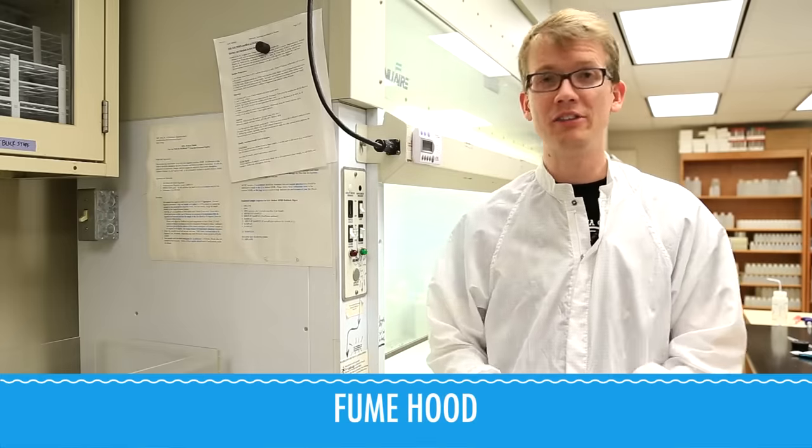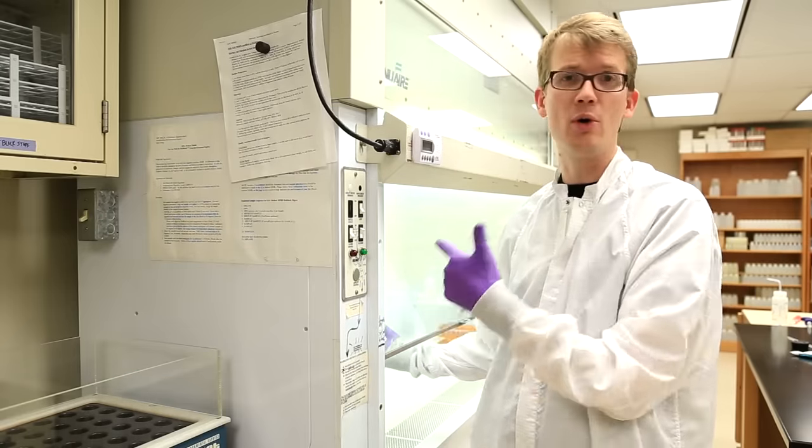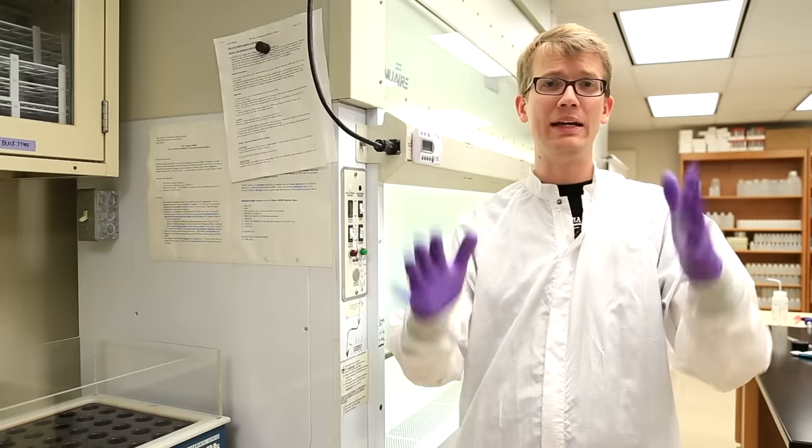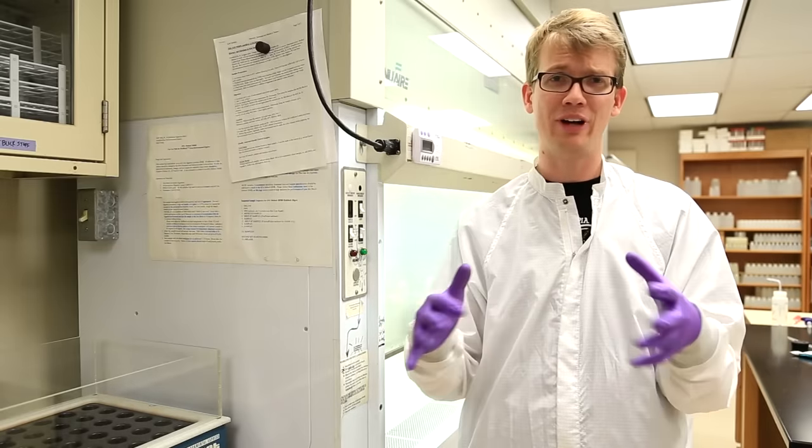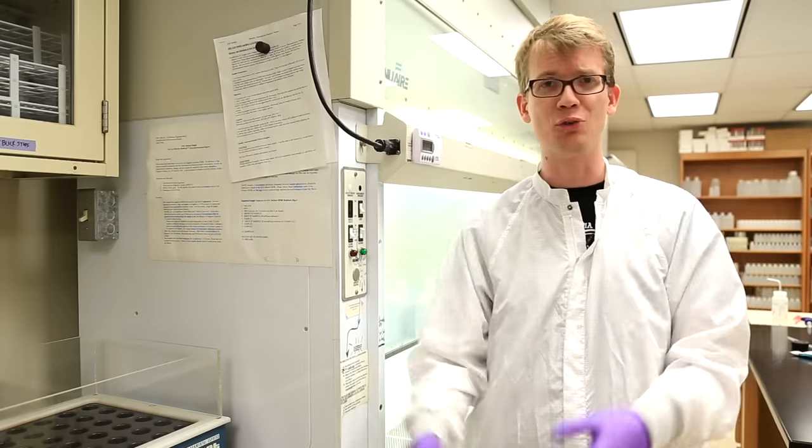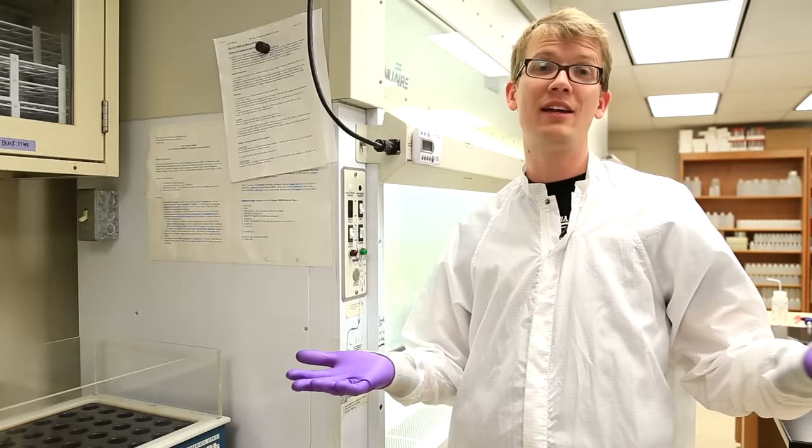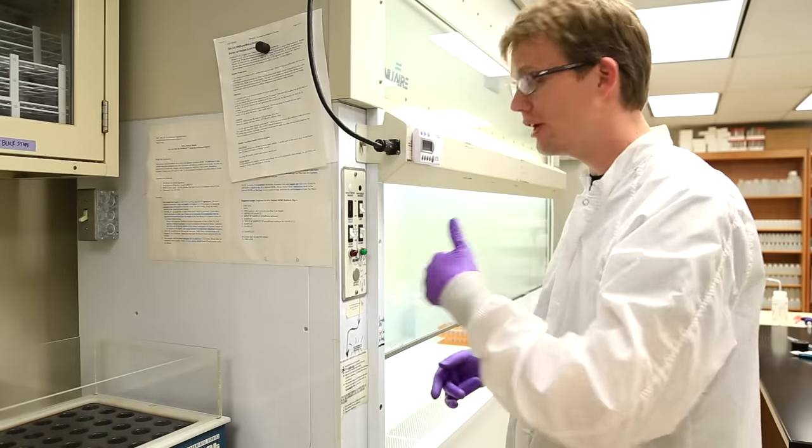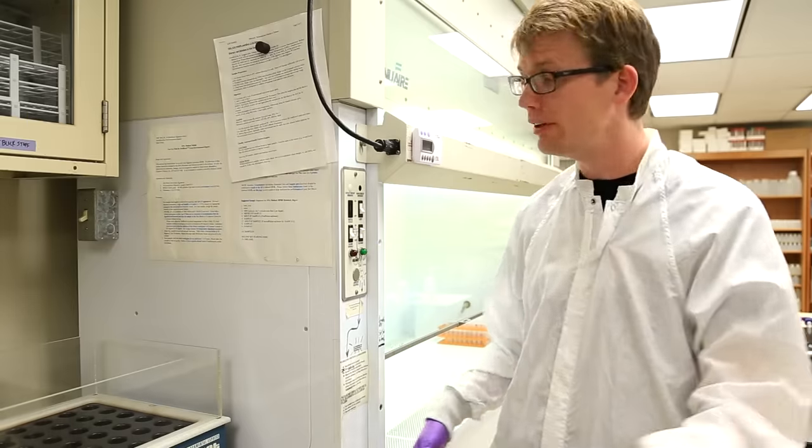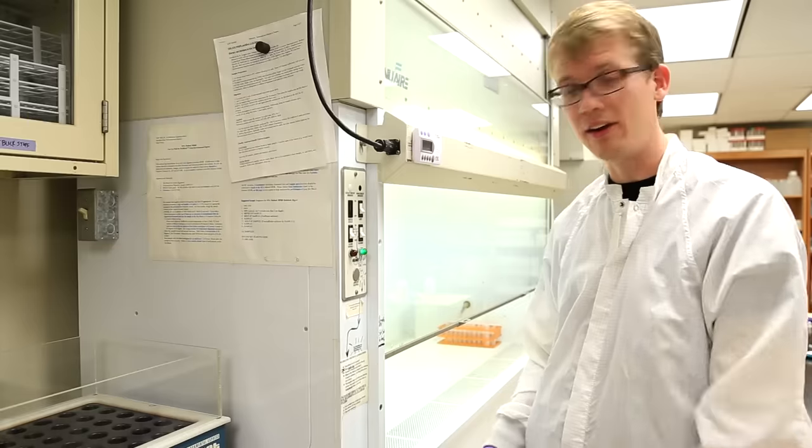This baby here is a fume hood. It sucks all the air in there out so you don't have to breathe whatever's going on in there. It's also why it's impossible to keep chemistry labs at the proper temperature because the AC units and heating units are constantly pumping in controlled air, and these are constantly sucking it out. So if you're doing some chemistry that might contain some noxious fumes, that goes on in here. And if you want it to work properly, first you've got to turn it on. That's the vent. That's the blower. Now it is sucking air.